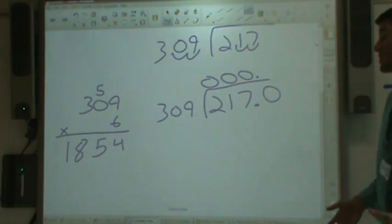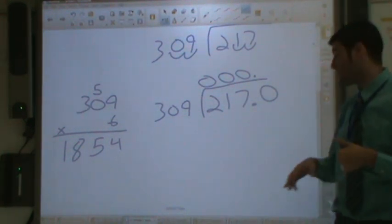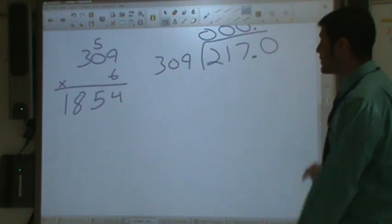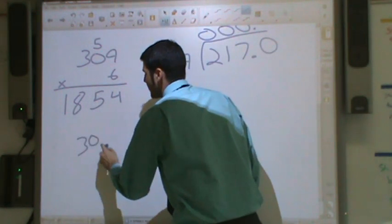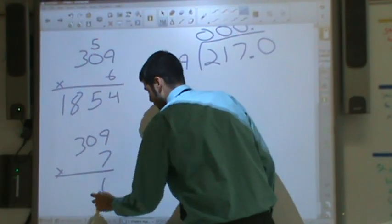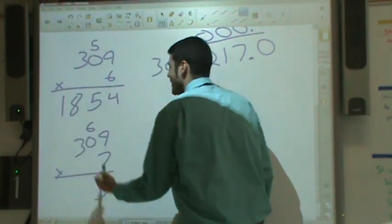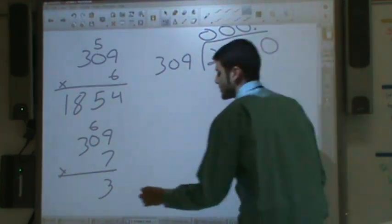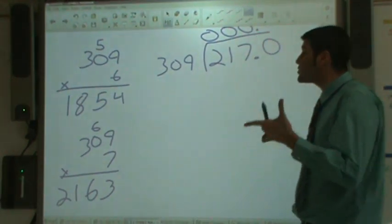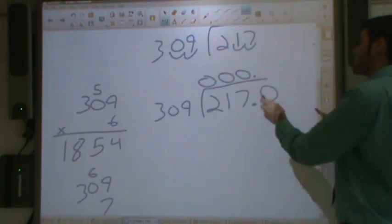Now you think to yourself, can I fit in another 309 without going over 2170? I really don't know. Let's take a look and try 309 times seven. Nine times seven is 63. Seven times zero is zero, plus six is six. And then seven times three is 21. Very close, but it does go in there, 2,163. It goes in there seven times.